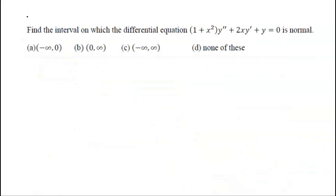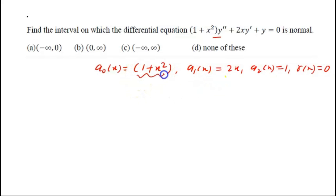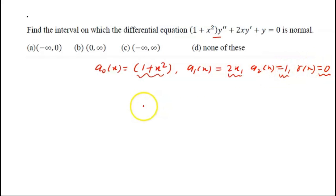The next question is similar to the one we just discussed. The coefficient of the highest order term is a₀(x) = 1 + x². Then a₁(x) = 2x and a₂(x) = 1, with right-hand side r(x) = 0. These are polynomial and constant functions, so they are everywhere continuous in the whole real line (-∞, ∞).